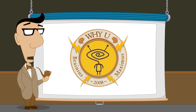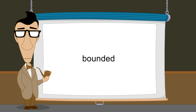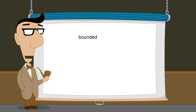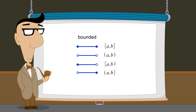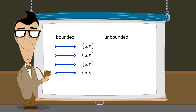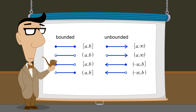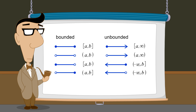In the previous lectures we described bounded and unbounded intervals. Bounded intervals are limited by their endpoints to a finite length on the number line. Bounded intervals can be closed, open, left closed right open, or left open right closed. Unbounded intervals can be right unbounded and left closed or open, left unbounded and right closed or open, or unbounded on both ends.